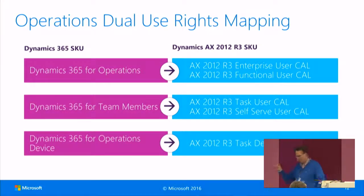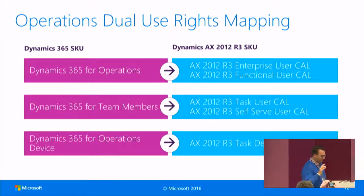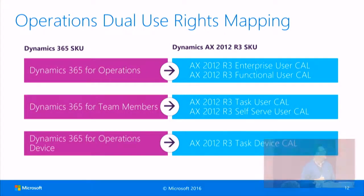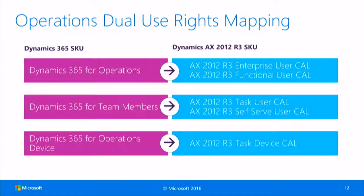Looking at the mapping of dual use rights: the Dynamics 365 for Operations full user maps to either an enterprise user or functional user — most likely enterprise user. Team members can be mapped to either task user or self-service user in AX 2012. The Dynamics 365 for Operations device license maps to the task device license from AX 2012 R3.